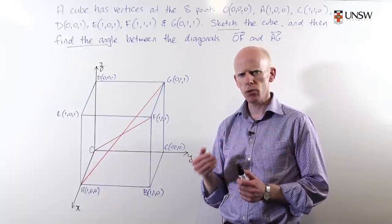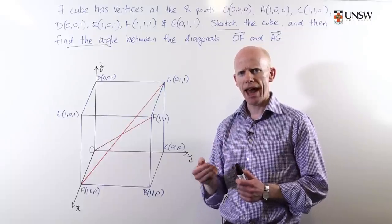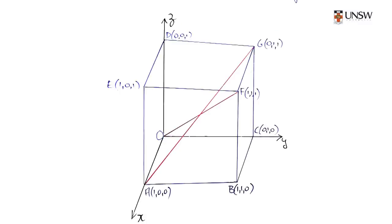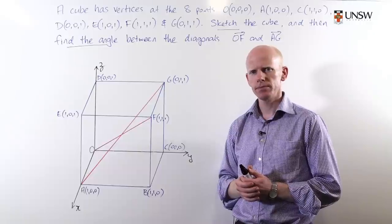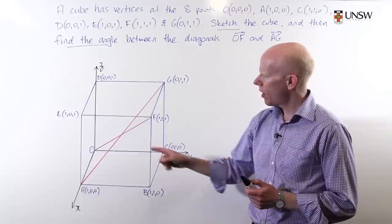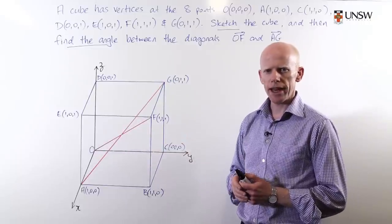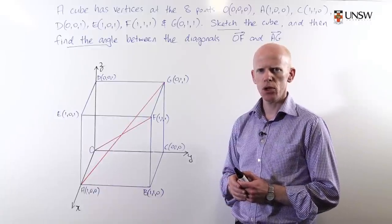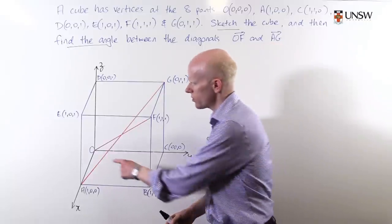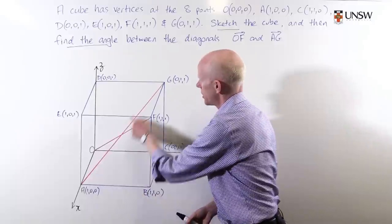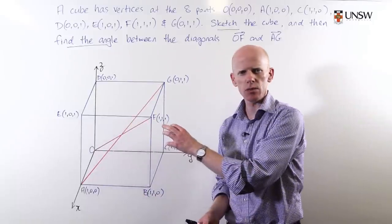What I'd like you to do now is stop the video and practice drawing this cube yourself. Decide on the axes, plot the eight vertices, and draw the cube. Compare your answer with my answer. I've looked ahead in the question and drawn the two diagonals OF and AG, and I was able to position the x-axis so that both diagonals are easily visible on my diagram.